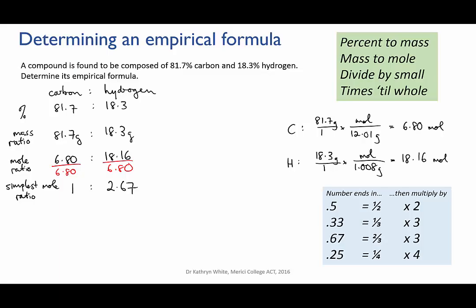If your number ends in 0.5 then it means it's something and a half. And if you multiply through by 2 it will become a whole number. If it ends in 0.33 or 0.67 or close to, then it's something and a third or something and two thirds. And you'll need to multiply through by 3 to make that fraction a whole number. And if it ends in 0.25 then it's something and a quarter. And you multiply through by 4.